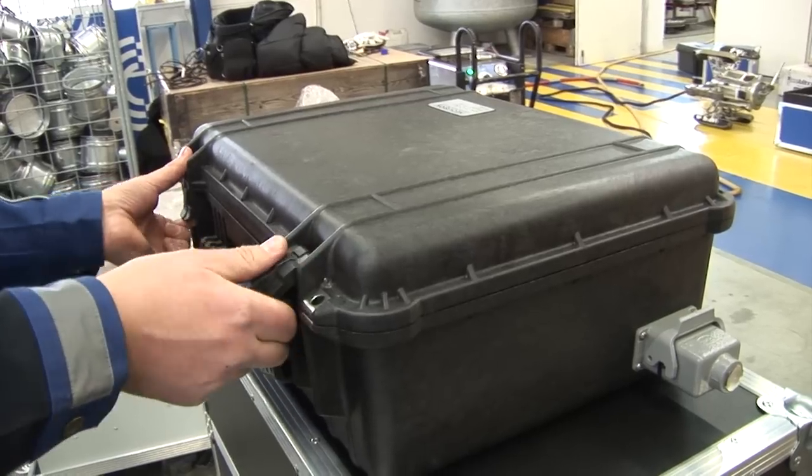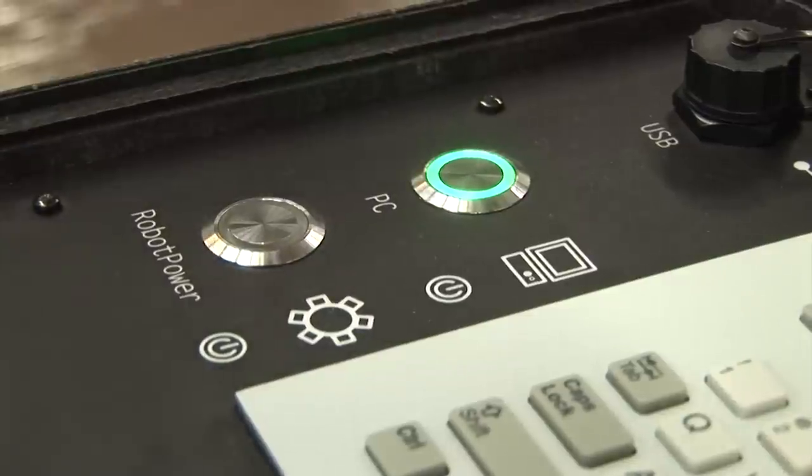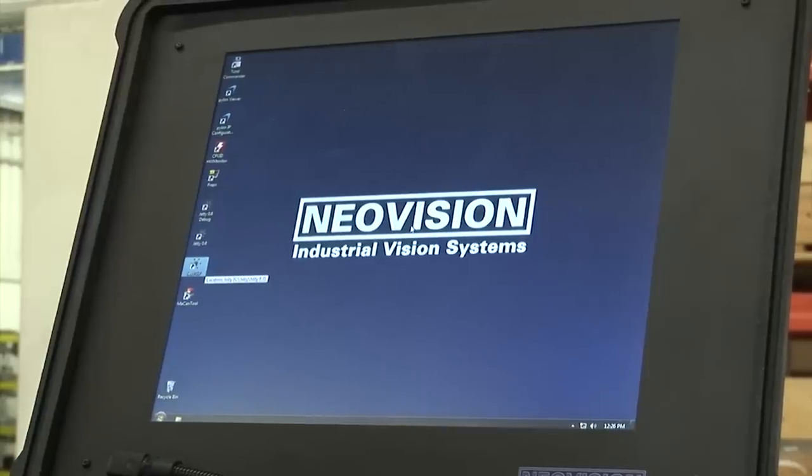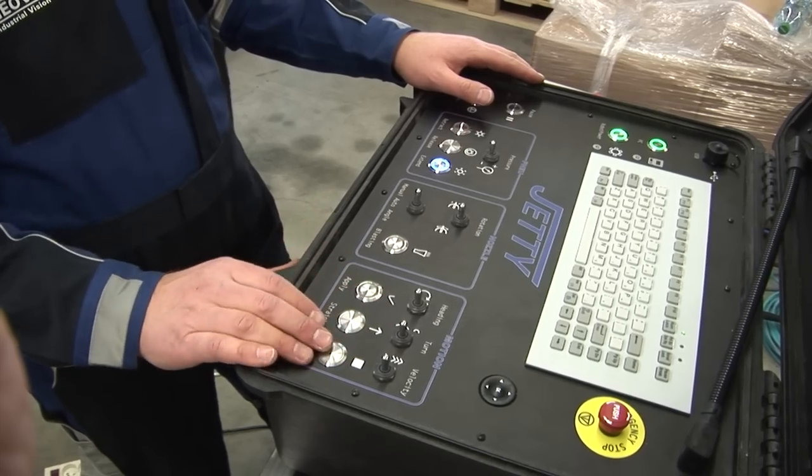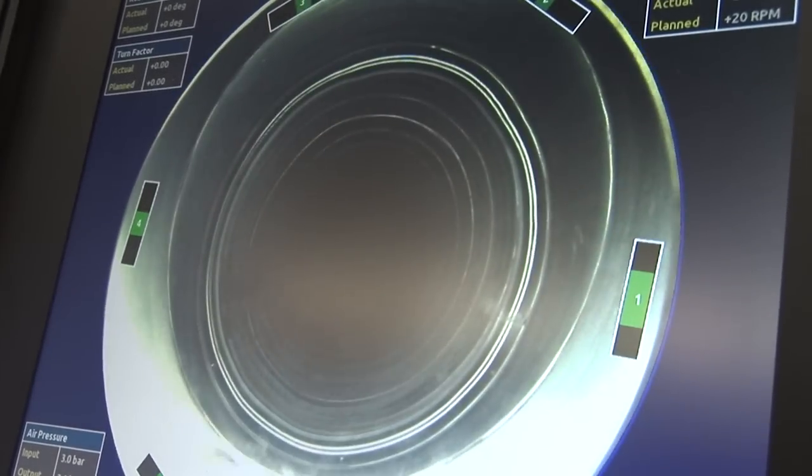The operator controls the robot from a safe location using a control panel. The duct ahead of the robot is scanned by a camera and the operator can observe it on the monitor. The operator can easily position the robot as needed by manipulating the control panel.